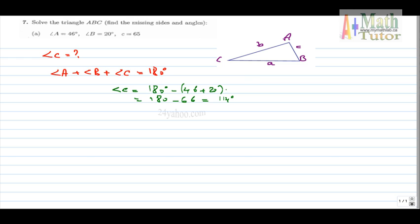Again, this is a rough sketch. 114 is an obtuse angle, so for sure this does not represent my angle.